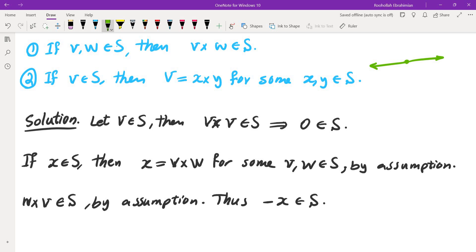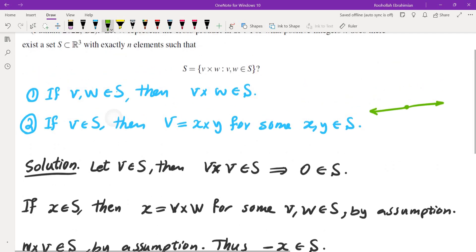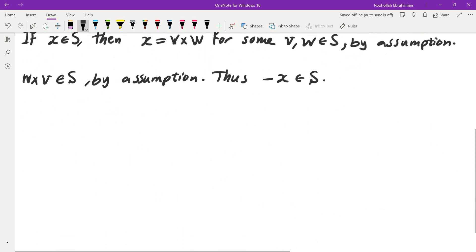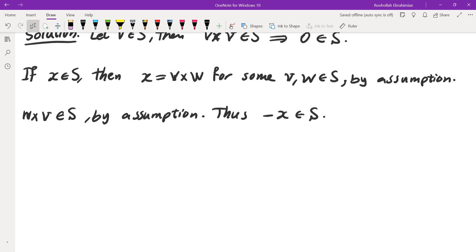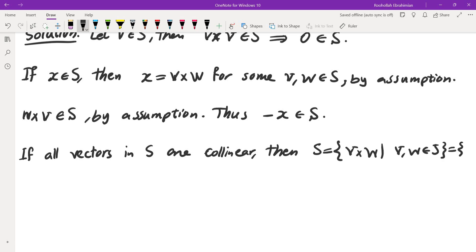Now, could it be the case that all of the vectors in S are in the same direction or collinear? Well, that can only be the case if the set S is zero. So let's establish that. If all vectors in S are collinear, then S is going to be V cross W where V and W are in S, which is just zero.